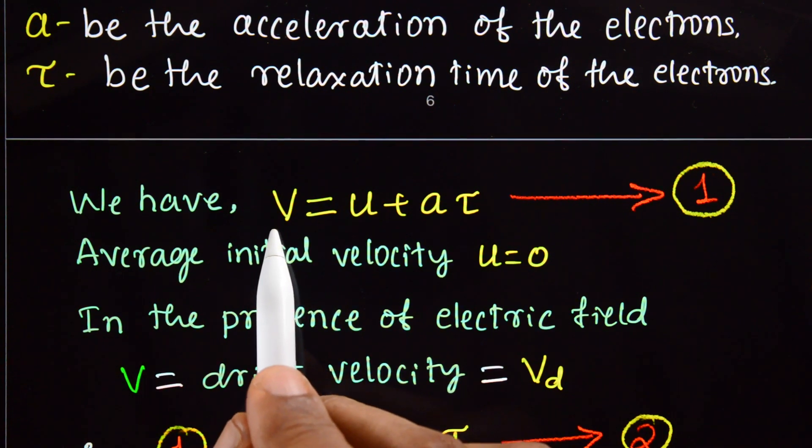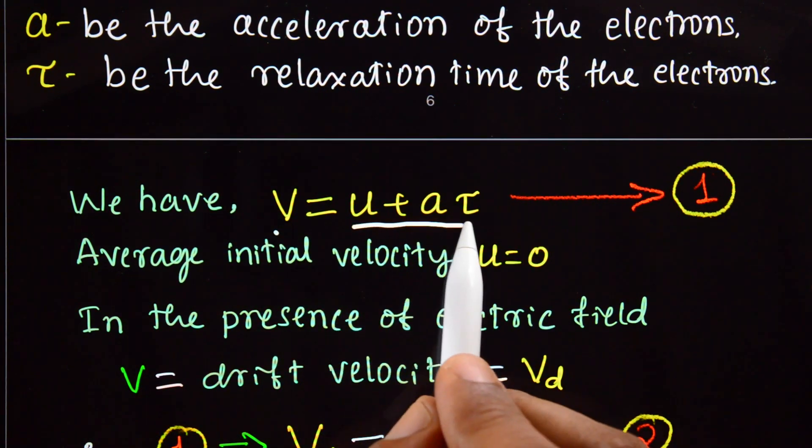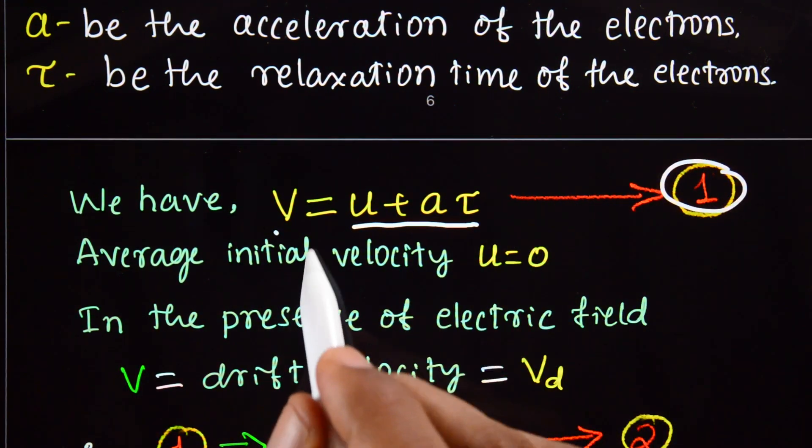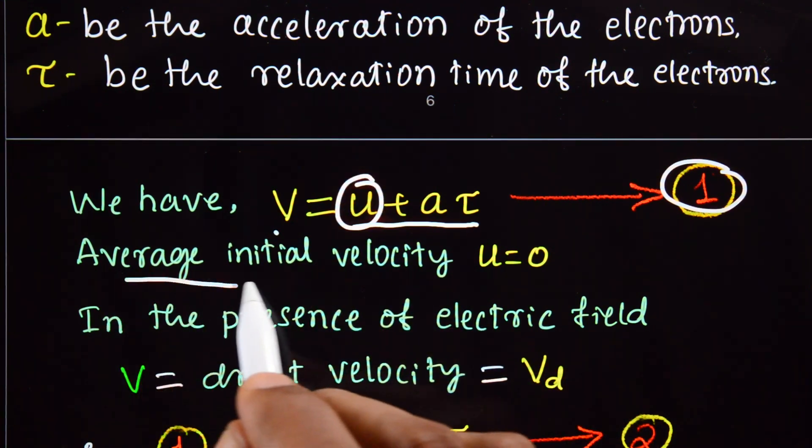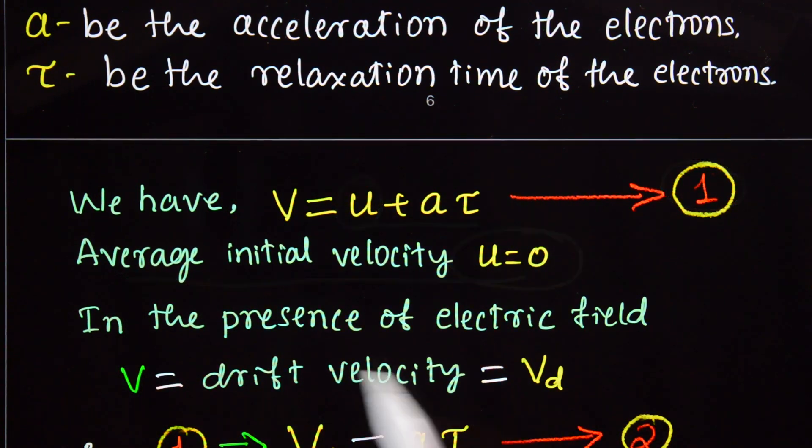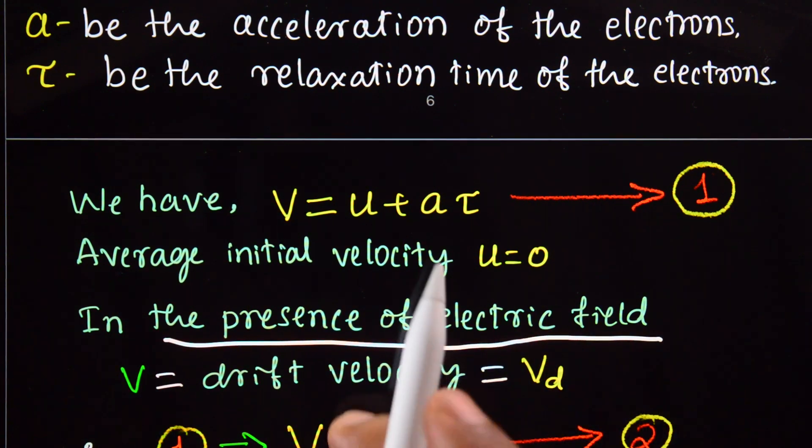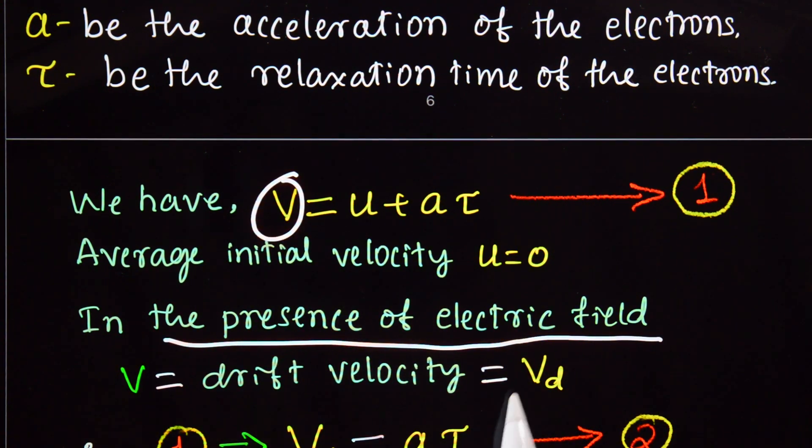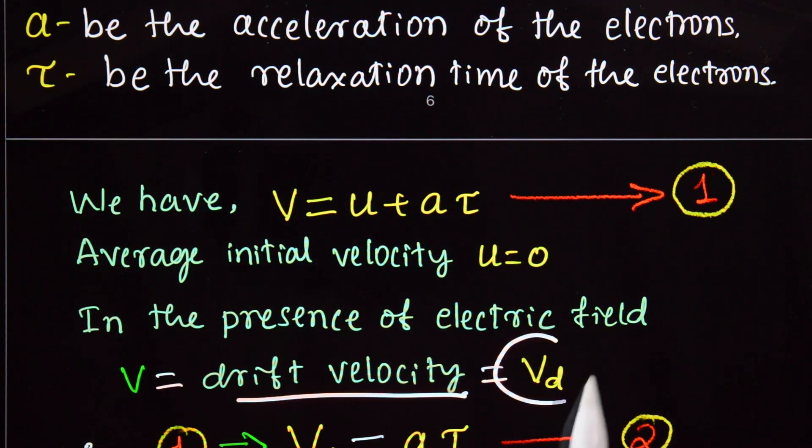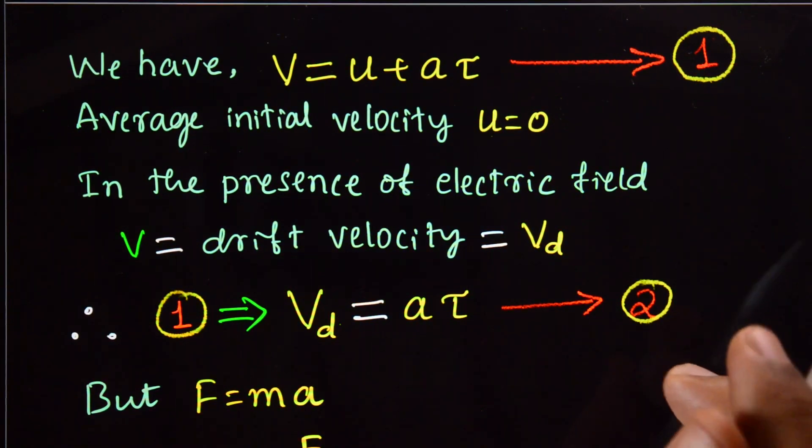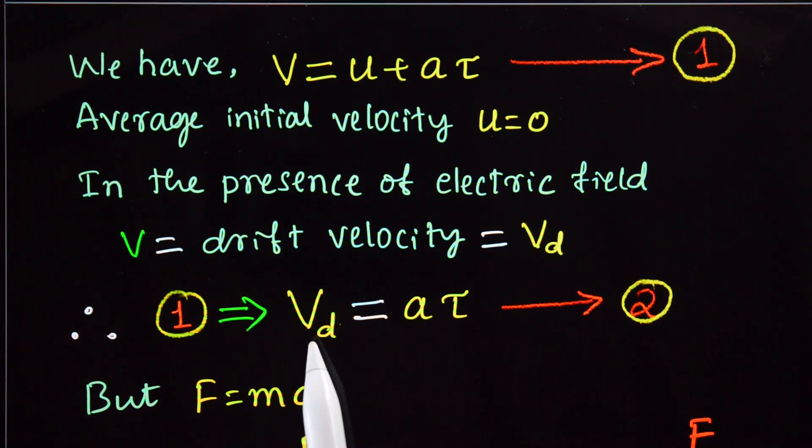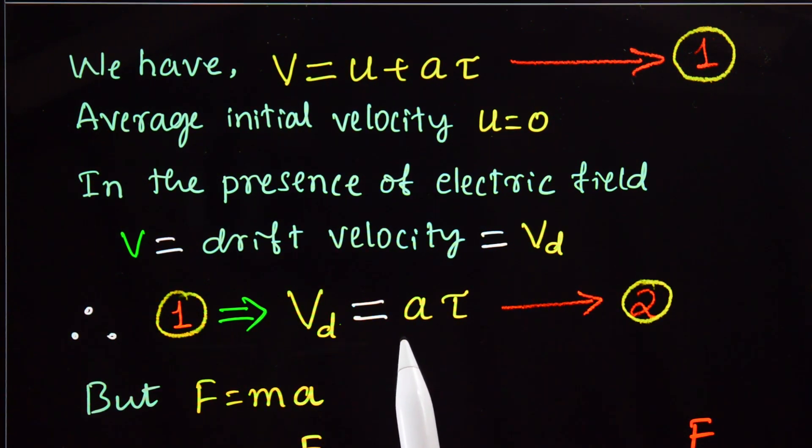v equals u plus at - that is our first equation. But the average initial velocity is zero. In the presence of electric field, this v is the same as drift velocity V_d. So equation 1 becomes V_d equals a times tau.